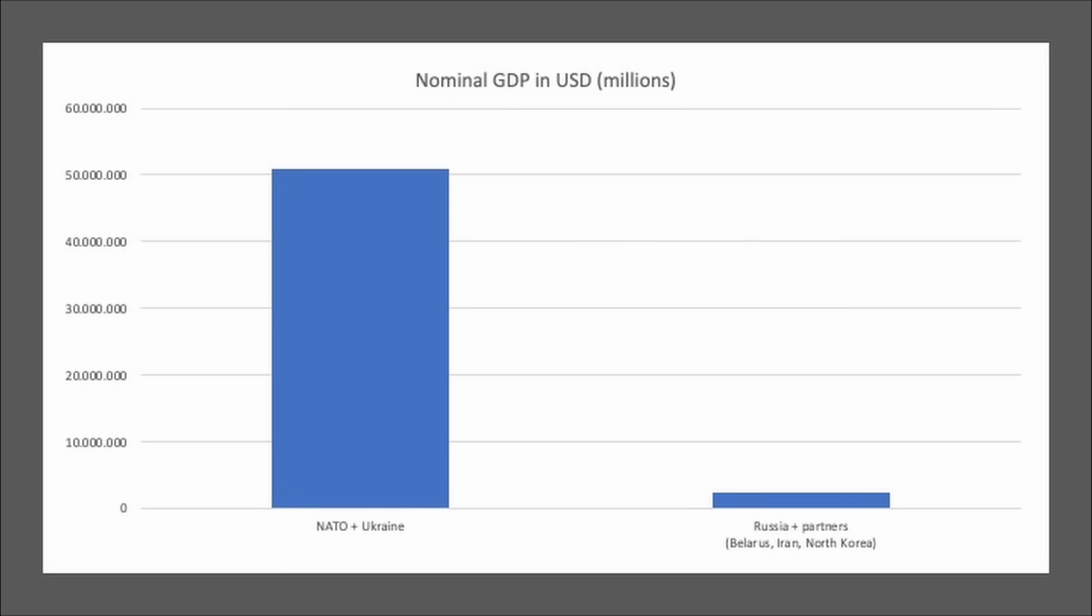These numbers are the IMF forecast for 2023 and I took them from Wikipedia. If we take those two blocks and we put them side by side, then this is the picture we get. The combined production capacity of the West is many times bigger than the production capacity of Russia and their supporters in the war.